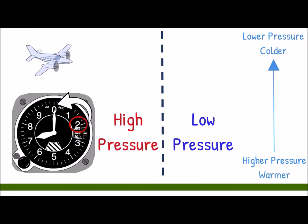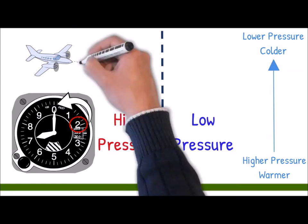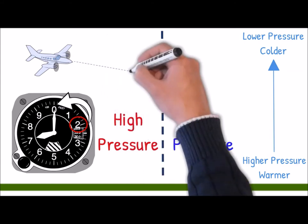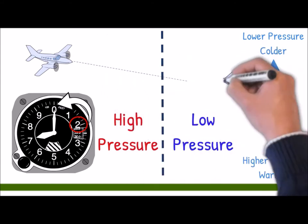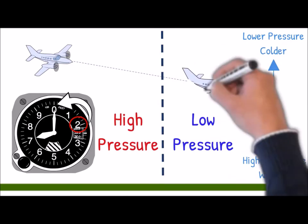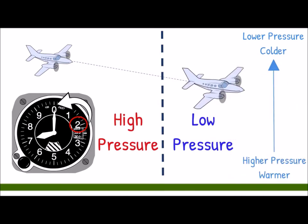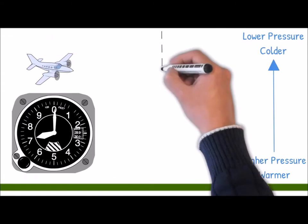Without changing the altimeter setting to adjust for this difference in air pressure, the pilot would gradually descend to maintain an indicated altitude of 7,000 feet. This would mean the pilot is now flying 200 feet lower than desired. The aircraft's true altitude — the altitude above mean sea level — will be lower than indicated. Hence the term: high to low, look out below.